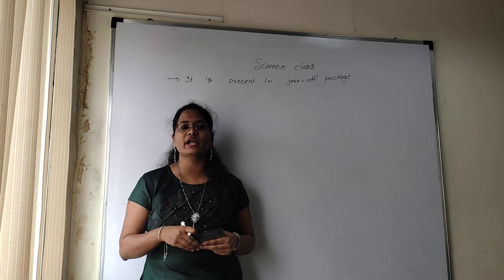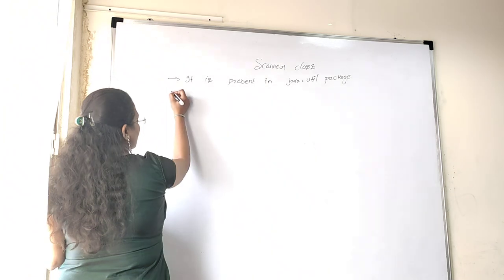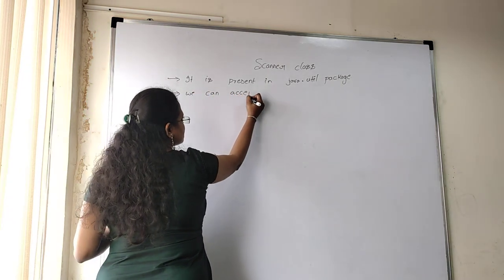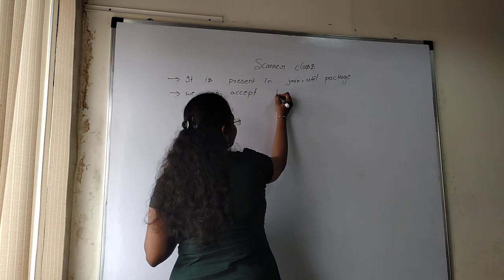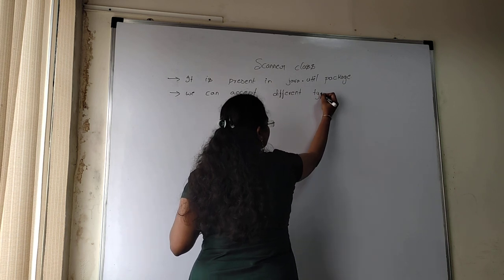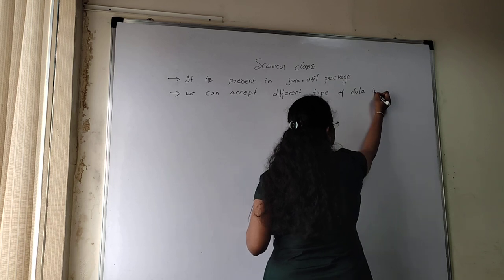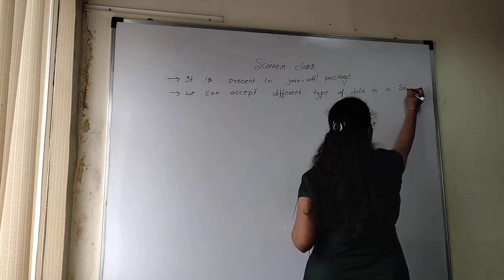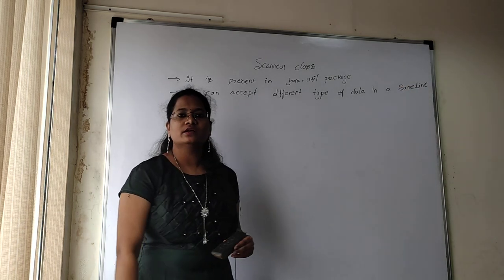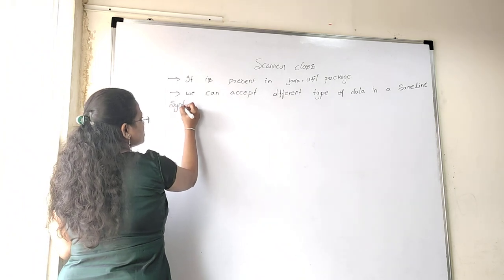In BufferedReader class, values can be accepted one by one — one after another from the keyboard. But when we are using Scanner class, we can accept different types of data in the same line. This is what we mean by Scanner class.